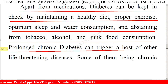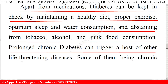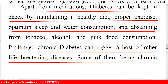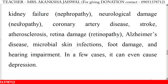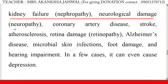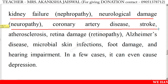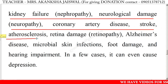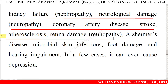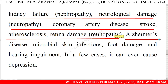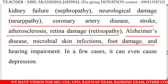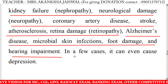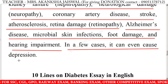Prolonged chronic diabetes can trigger a host of other life-threatening diseases. Some of them being chronic kidney failure, nephropathy, neurological damage, neuropathy, coronary artery disease, stroke, atherosclerosis, retina damage, retinopathy, Alzheimer's disease, microbial skin infections, foot damage and hearing impairment. In a few cases, it can even cause depression.